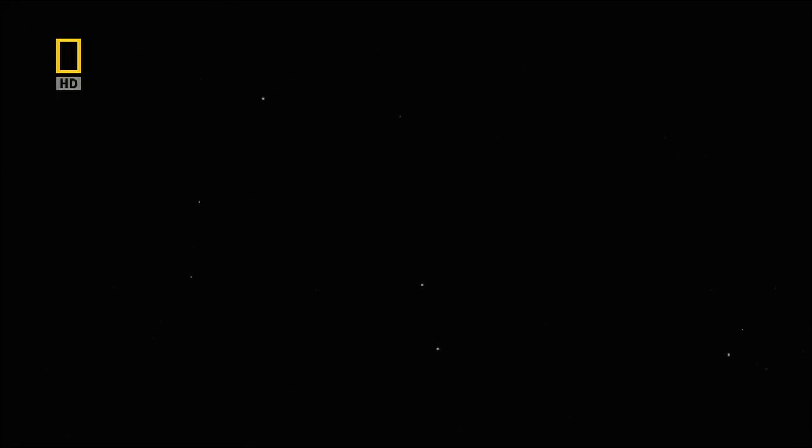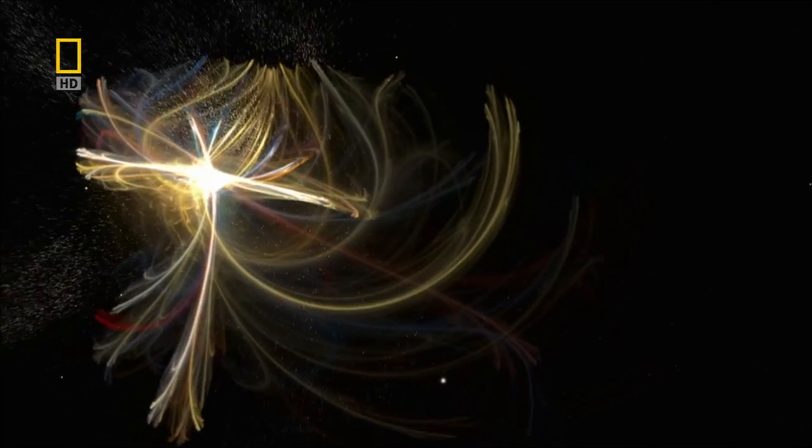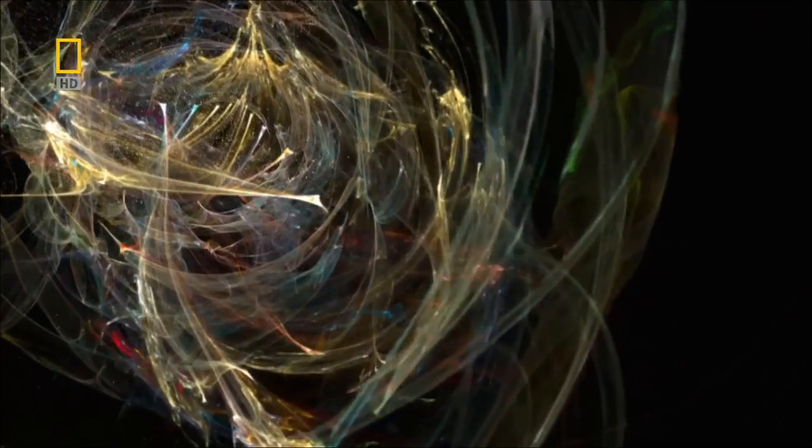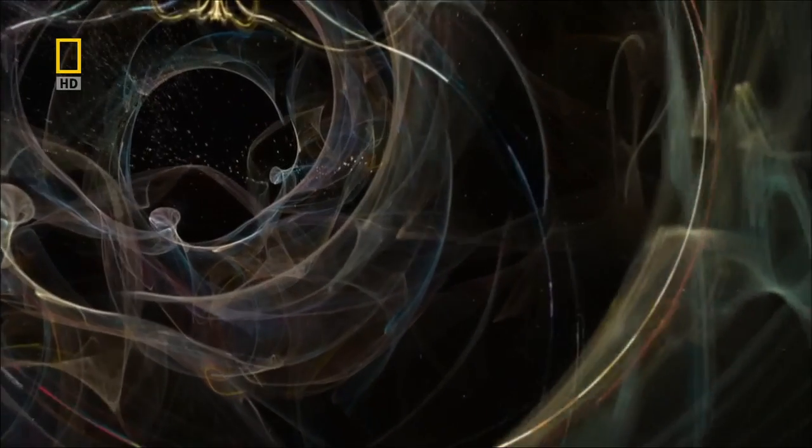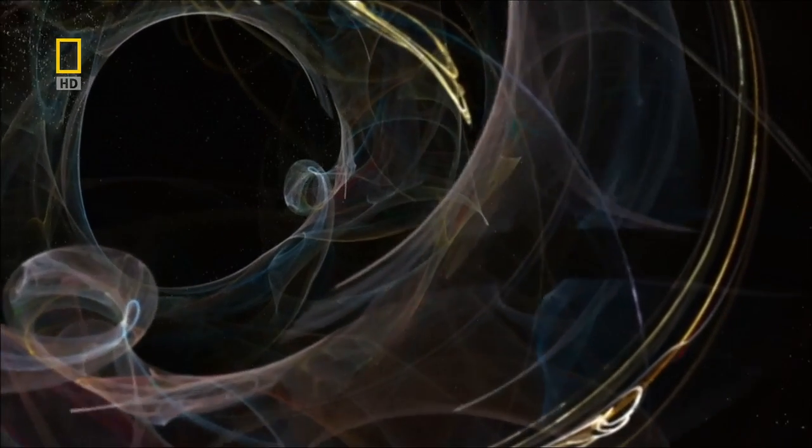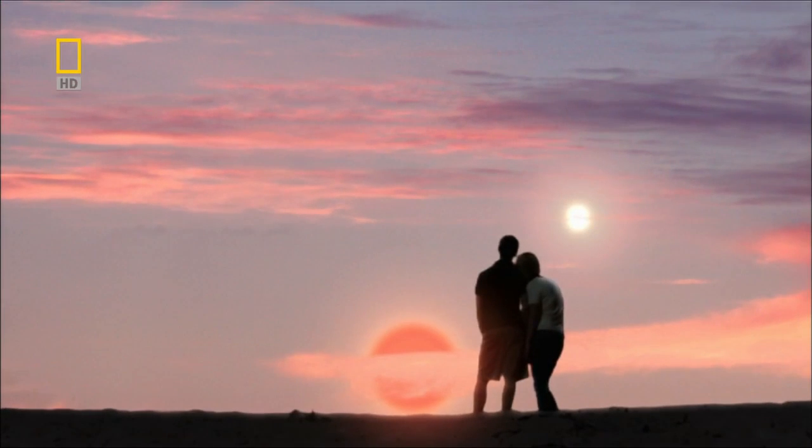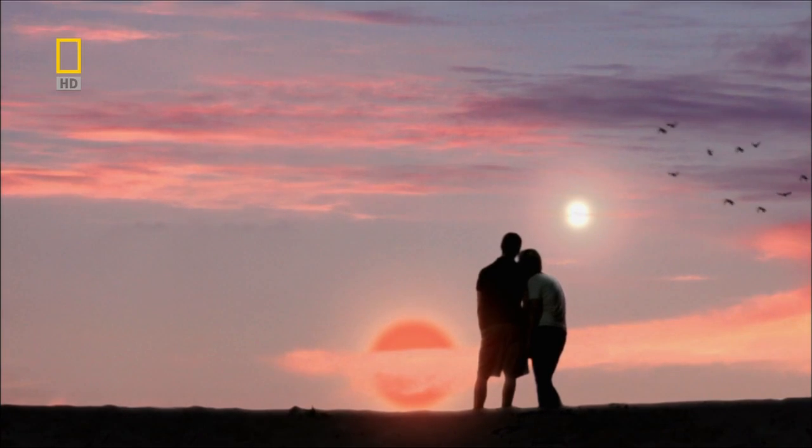There could be a way out. An escape route from our dying universe. It might be possible for our distant descendants to find a shortcut through space and time, a wormhole. If there are other universes, it could take our descendants from our doomed universe into a parallel one, where they could find another Earth, still in the prime of life. If they're lucky enough, they will live on in a new universe, a new home.